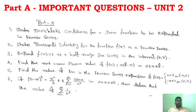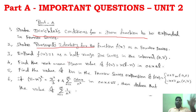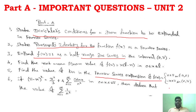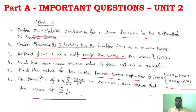Unit 2 Part A: state the Dirichlet condition for a given function to be expanded in Fourier series — this is a very important question, asked as a 2-mark question in nearly every question paper. Expand f(x), expand as a half-range sine series, find the root mean square of f(x), Fourier series expansion problems, and deduce the value of the series 1/n².